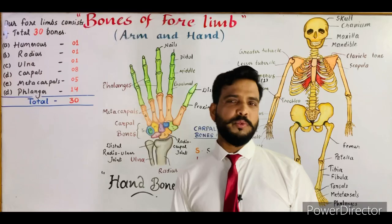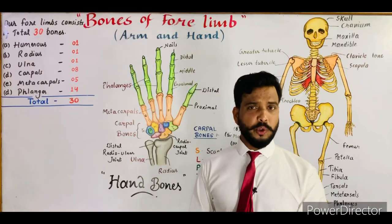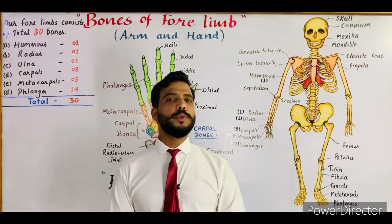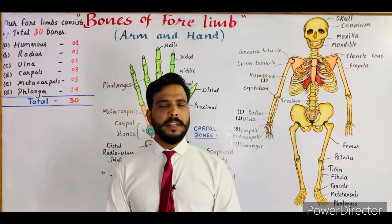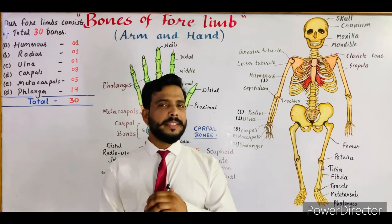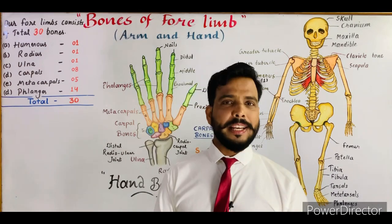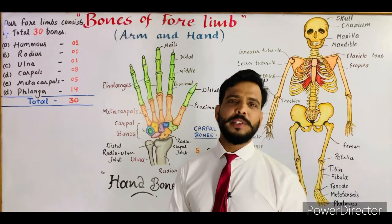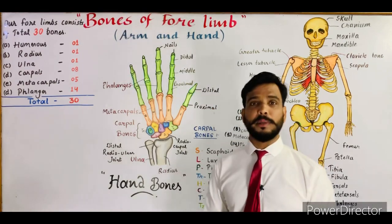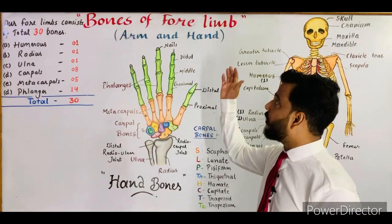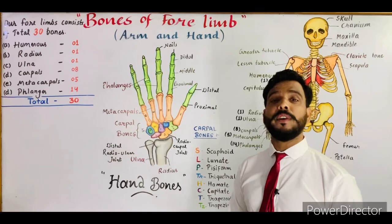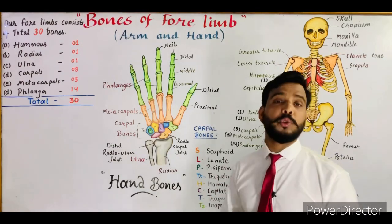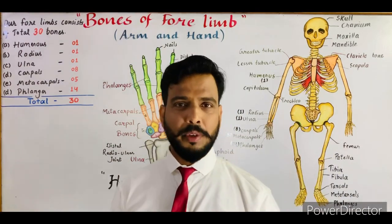Good morning everyone, my name is Vijay Gupta and you're watching biology classes. Welcome to all of you. In this lecture of biology, I'm currently making all my videos related to the human skeletal system. This is lecture number seven and I will tell you about the bones of our forelimbs — the bones of our arm and hand.